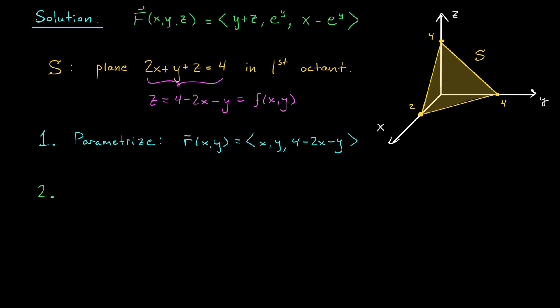Now on to step two. We have to compute r_x cross r_y. This is going to give us a vector that points perpendicular to our surface. Again, since we're dealing with the graph of a function, this is a little bit easier. r_x cross r_y is minus partial f by partial x, minus partial f by partial y, and 1. Well, it's not too hard to see from this expression that partial f by partial x is going to be minus 2, and partial f by partial y is minus 1. So I get the vector 2, 1, 1.